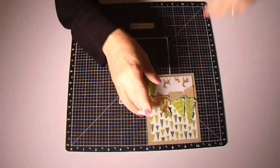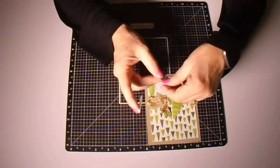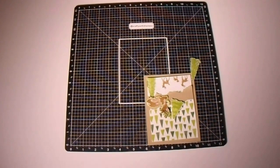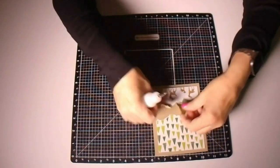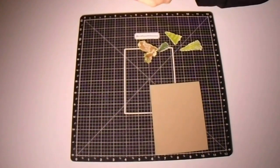I can wedge that other tree, the smaller green tree, on the inside of the other lighter green trees which I believe that color right there is mossy meadow.